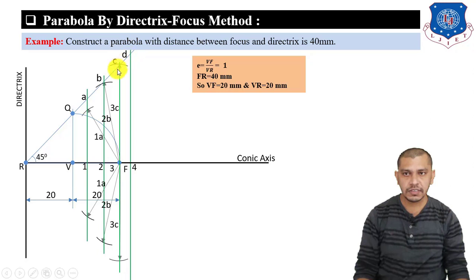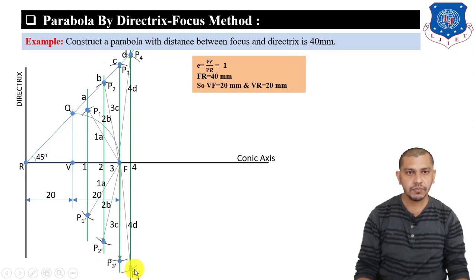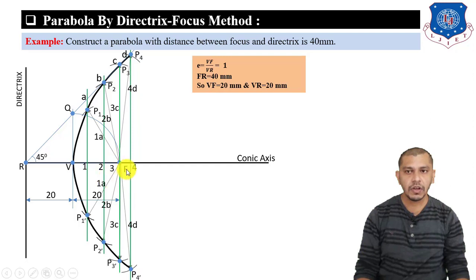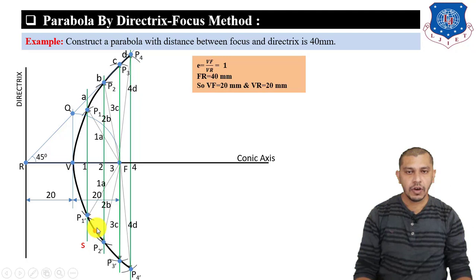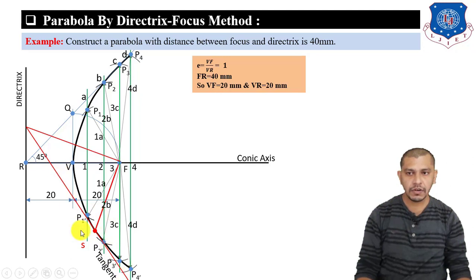Measure arc length 1A and from F as center give an arc on both sides. Measure arc length 2B, 3C, 4D and repeat. Mark all points P1, P2, P3, P4 and their dashes. Draw a freehand curve through all these points to get the parabola. For the tangent and normal: mark point S, connect to F, draw a perpendicular from F toward the directrix to get T, join T to S for the tangent, and draw normal perpendicular from S.